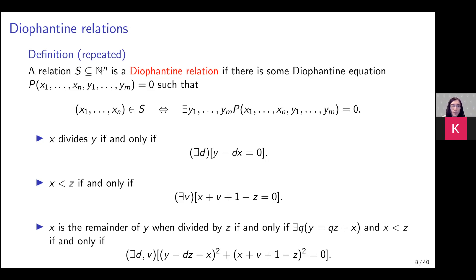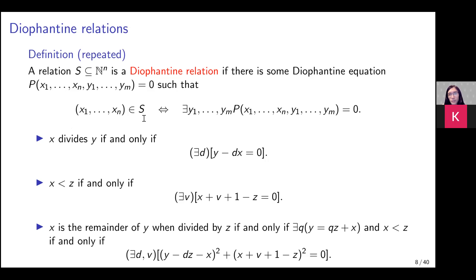A relation S on the natural numbers is a Diophantine relation if there is some Diophantine equation P — a polynomial with integer coefficients — such that a tuple is an element of S if and only if there are some y's such that this polynomial equals zero. Roughly speaking, we want this polynomial to have a solution, but it's really a family of polynomials parametrized by the x's that defines S.